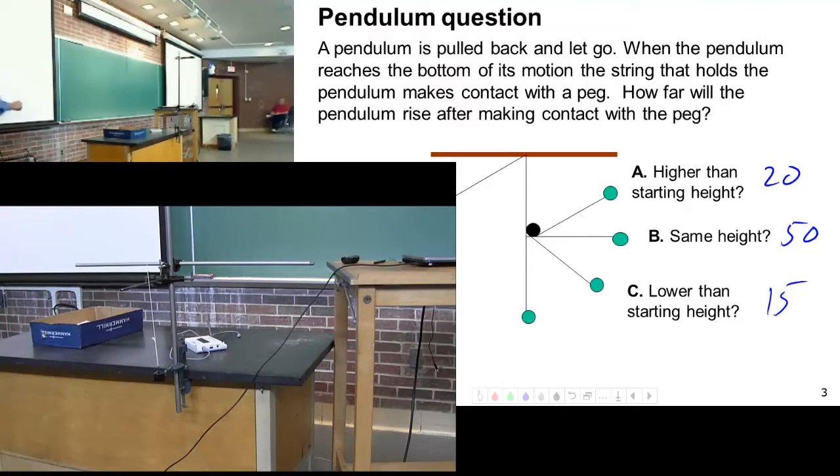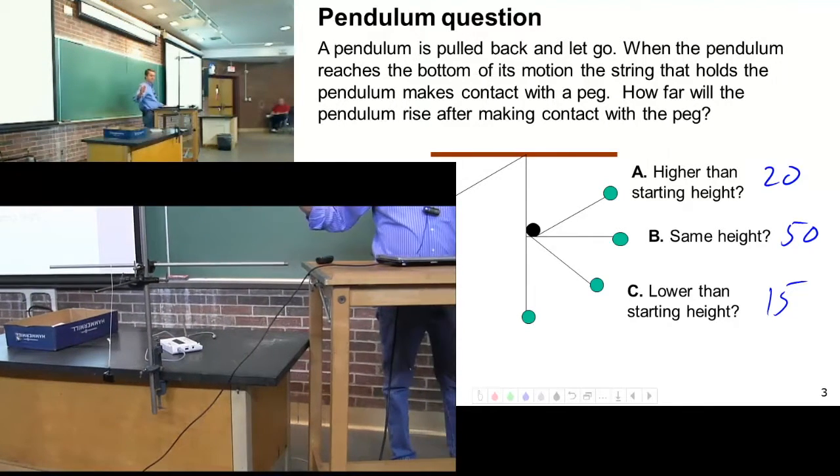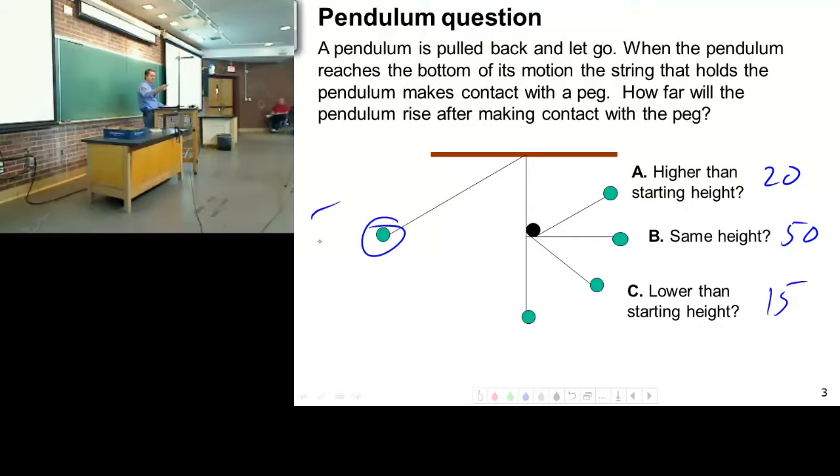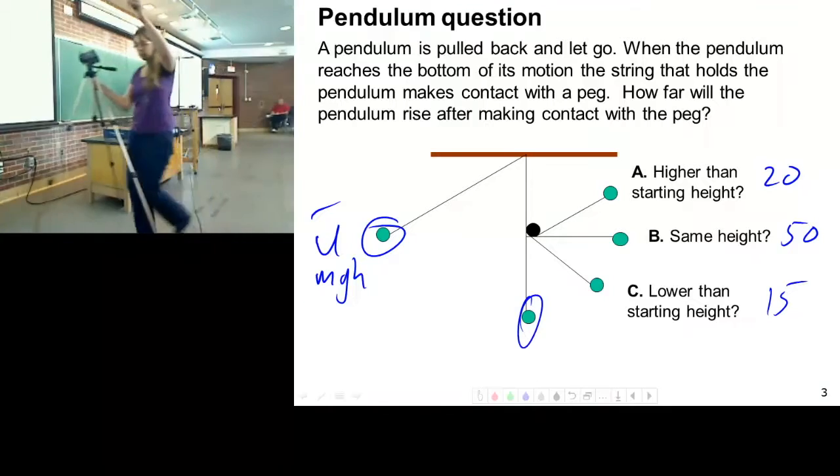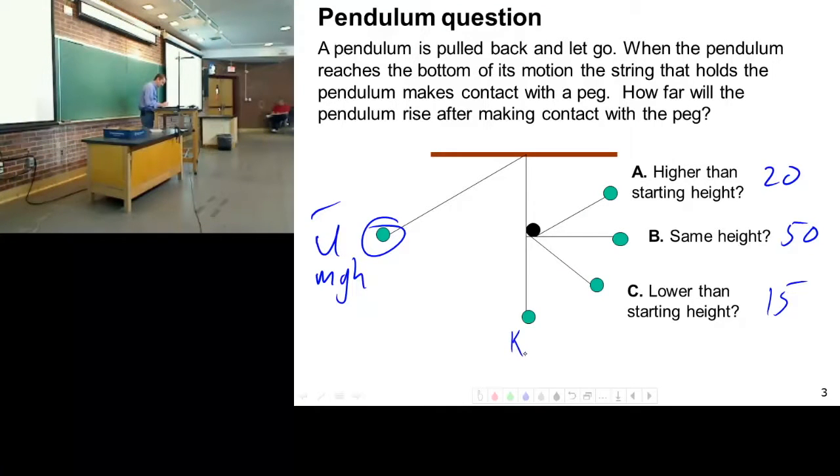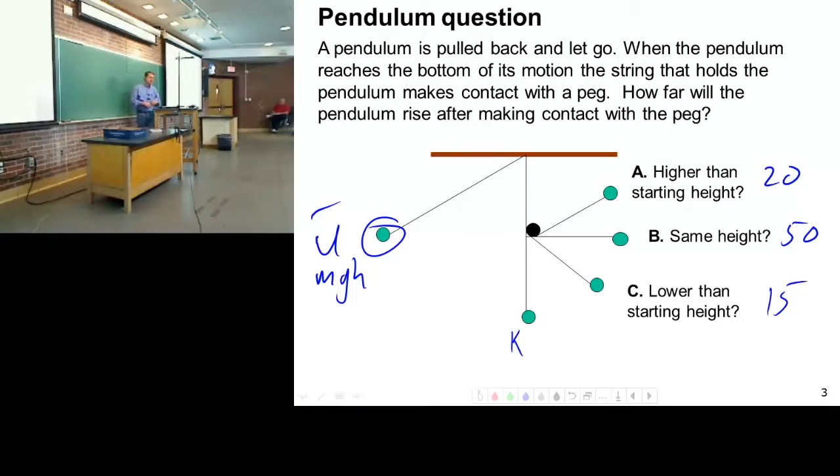If we just think about energy, it started with a certain amount of energy. It starts with a certain amount of energy right here. What's its energy right here? U, potential energy, right? It's just whatever amount of potential energy, which is MGH. When it gets to here, what's its energy? It's all kinetic. How much is it? Exactly what it had with the U, potential energy.